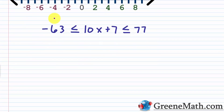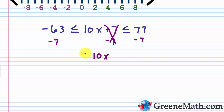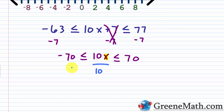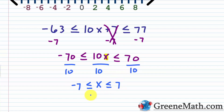We have negative 63 less than or equal to 10x plus 7 less than or equal to 77. I want to isolate x in the middle. Since 7 is being added to 10x, I subtract 7 from each part. That cancels in the middle, leaving 10x. On the left: negative 63 minus 7 is negative 70. On the right: 77 minus 7 is positive 70. Then I divide each part by 10 to isolate x. X is greater than or equal to negative 70 divided by 10, which is negative 7, and less than or equal to 70 divided by 10, which is 7.